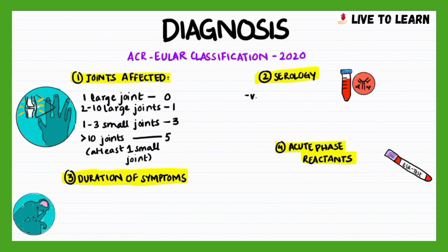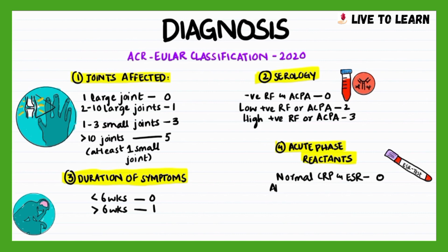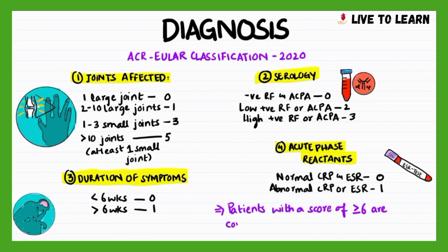A negative rheumatoid factor and anti-citrullinated protein antibody, or ACPA, will be given a score of 0. A low positive rheumatoid factor or ACPA will be given a score of 2, and a high positive rheumatoid factor or ACPA will be given a score of 3. For less than 6 weeks duration, a score of 0, and for more than 6 weeks, a score of 1 will be given. A normal CRP and ESR level will be given a score of 0, whereas an abnormal CRP or ESR level will be given a score of 1. Patients with a score of 6 or more are considered to have definite rheumatoid arthritis.